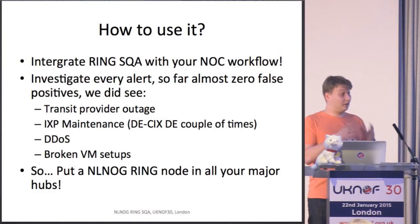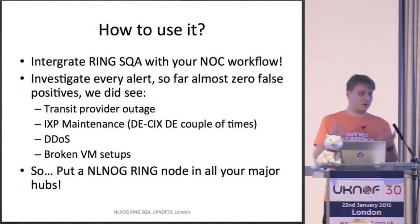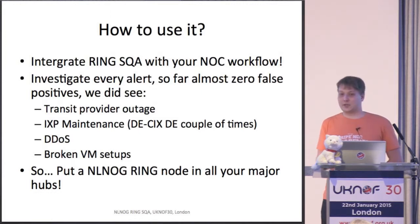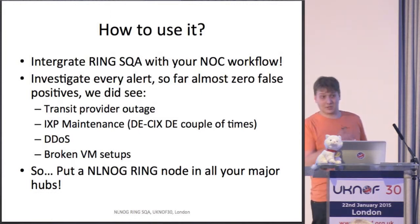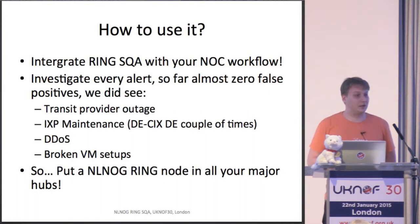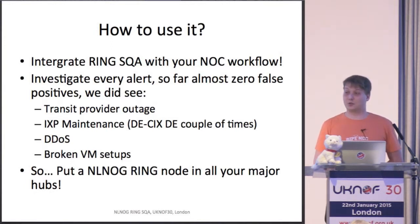I recommend that if you have a network with multiple core sites or hub sites, just put one ring node in every hub site. For instance, Amazon puts a ring node in every data center because it benefits their NOC. They have instructed their NOC how to use the ring to debug certain issues, and I recommend you do the same.